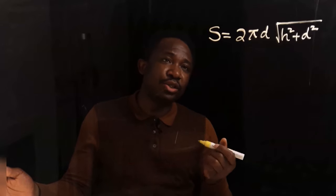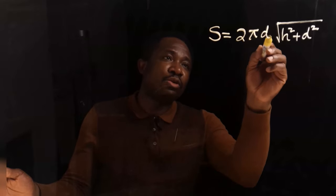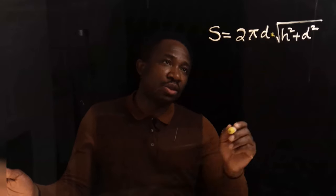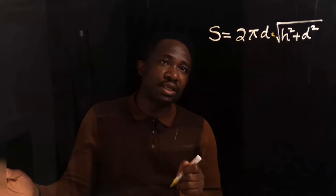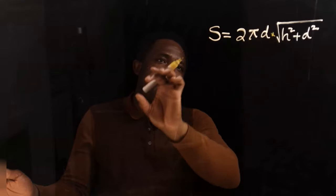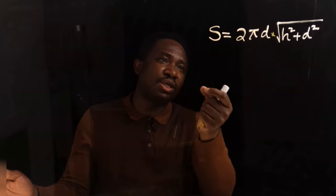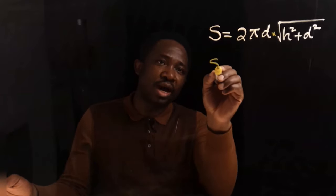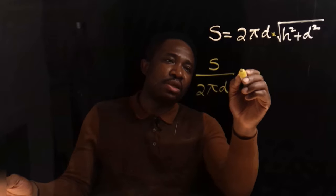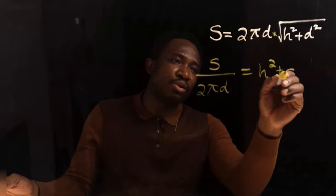Let's consider this equation: s equals 2πd multiplied by the square root of h squared plus d squared. We want to make h the subject. The first thing we are going to do is take 2πd across the equal sign. If a multiplying variable moves across the equal sign, it will divide. Hence we're going to have s divided by 2πd on this side.